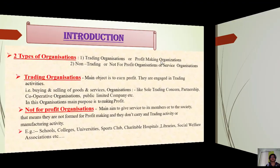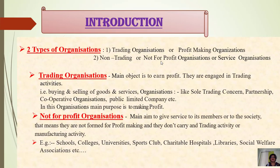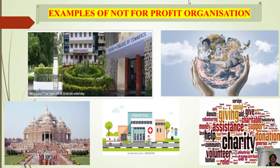Trading organization's main objective is to earn profit. And not-for-profit organization's main aim is to be service-oriented — to give services. Non-trading means not-for-profit organization. For example, BYK College — college, school, university — is an example of not-for-profit concern. Charitable trust, hospital, temples, sports club — these are all examples of not-for-profit organizations. Their main aim is to provide services, not earn profit.